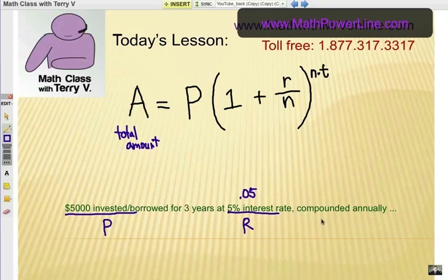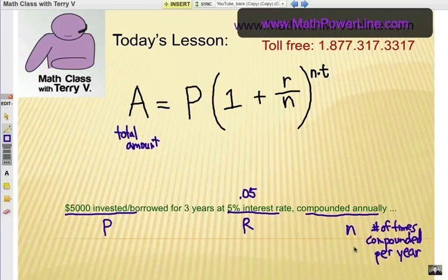N is the number of times compounded in one year. It's the number of times compounded in terms of one year. Now, in this case we have compounded annually. That means that every year it's compounded once. That's the simplest case.